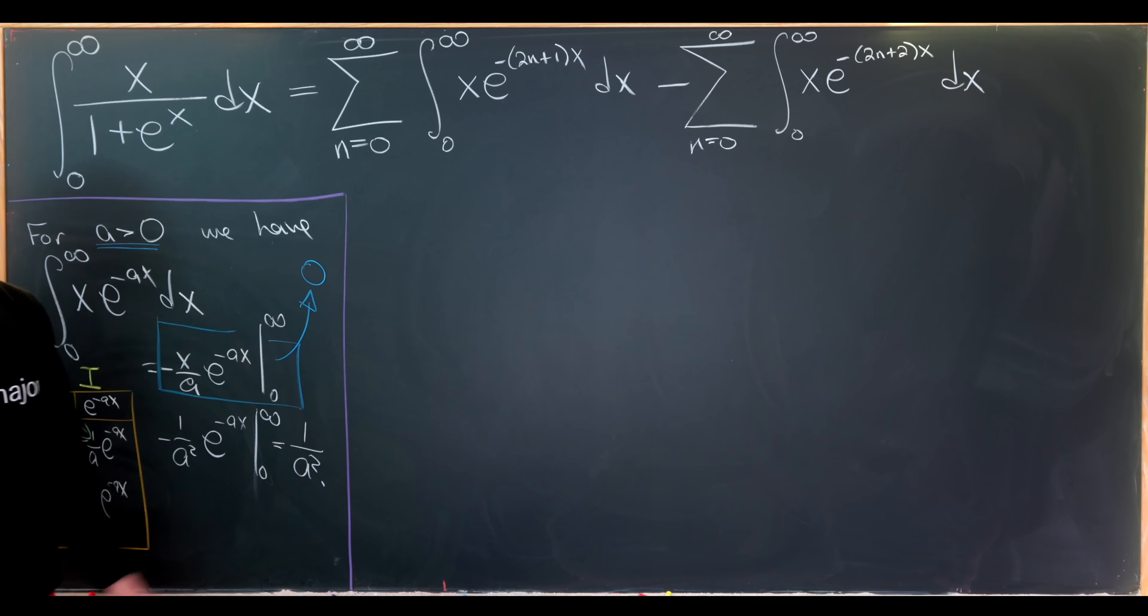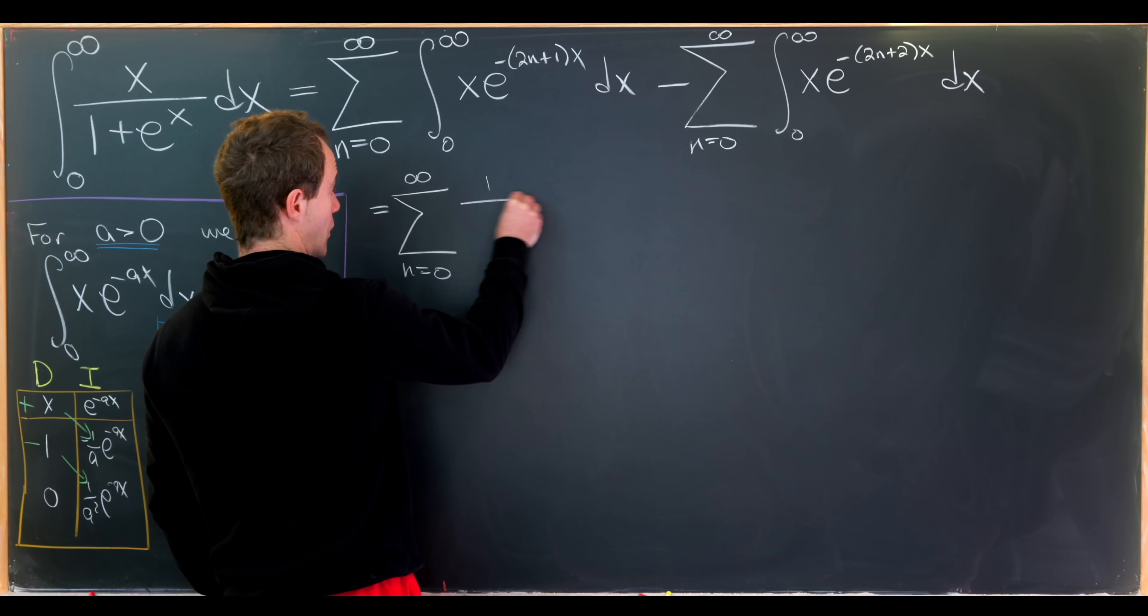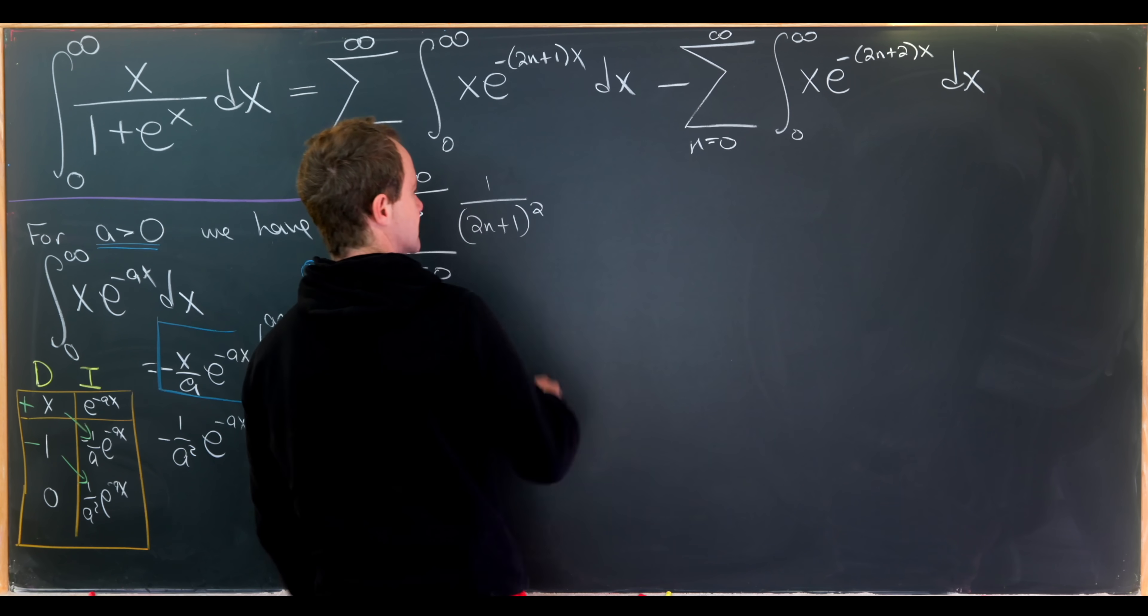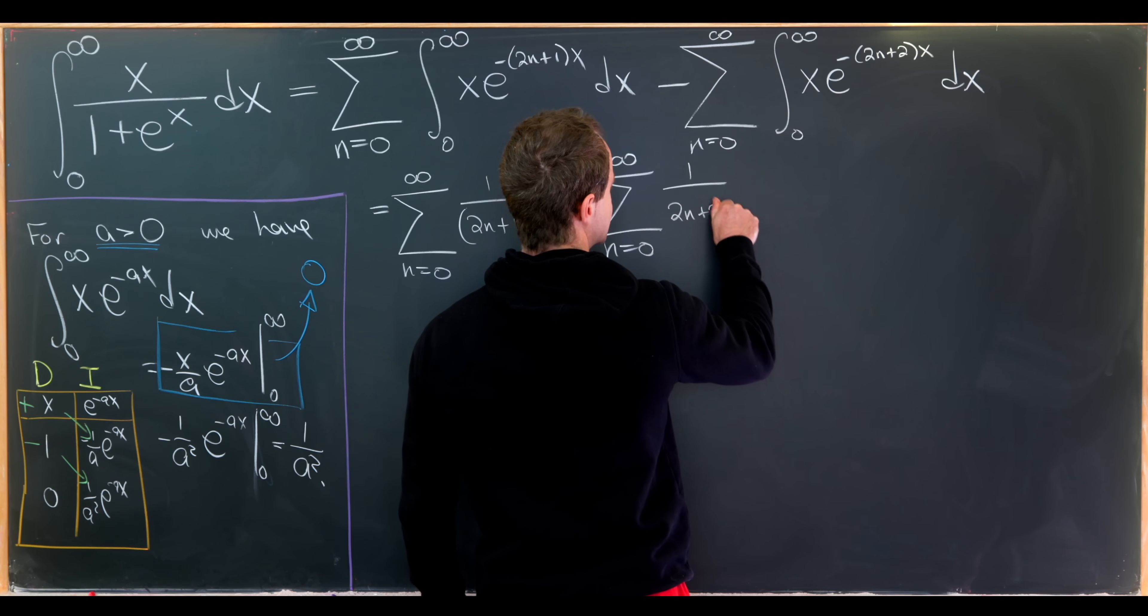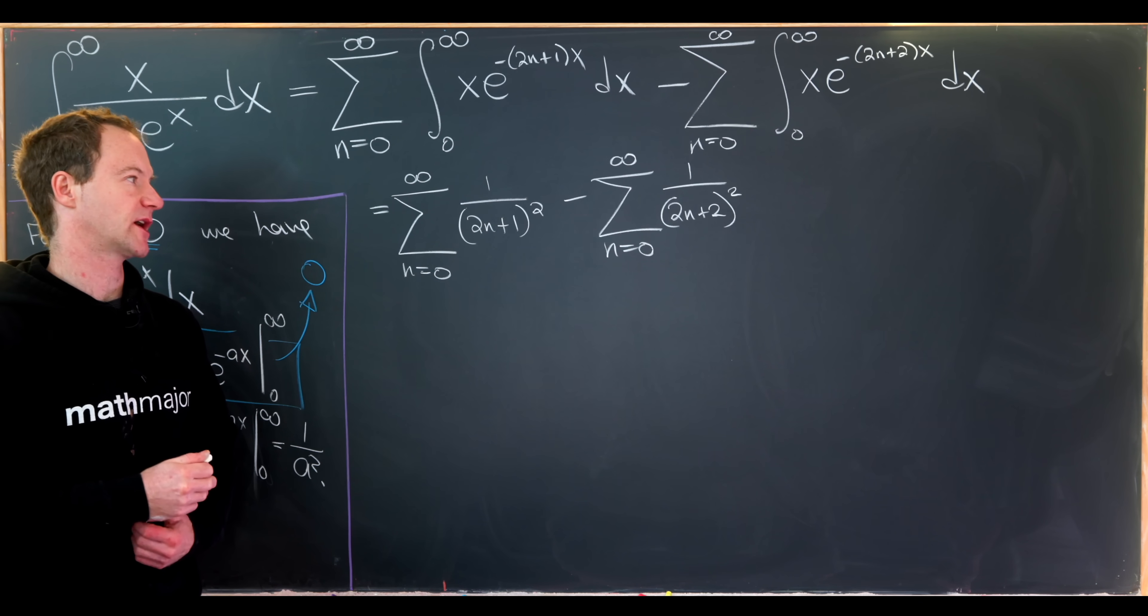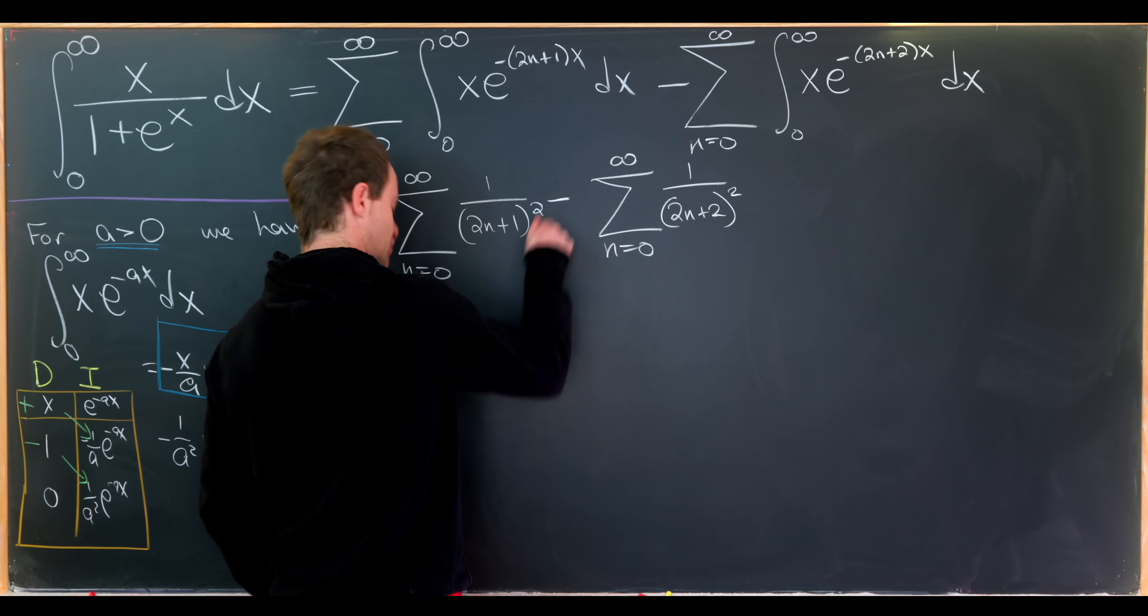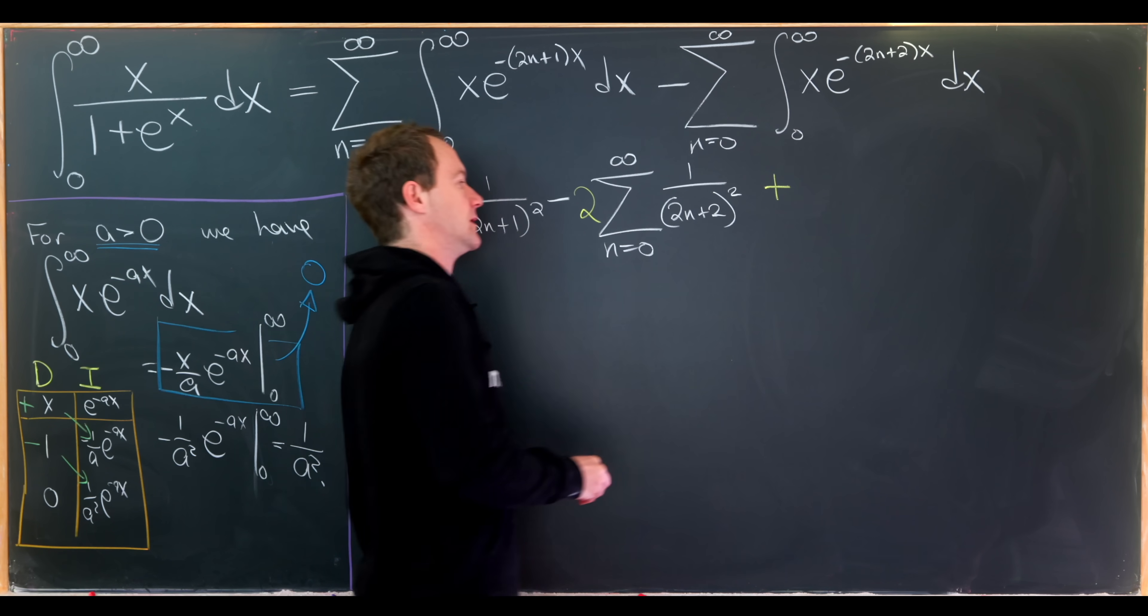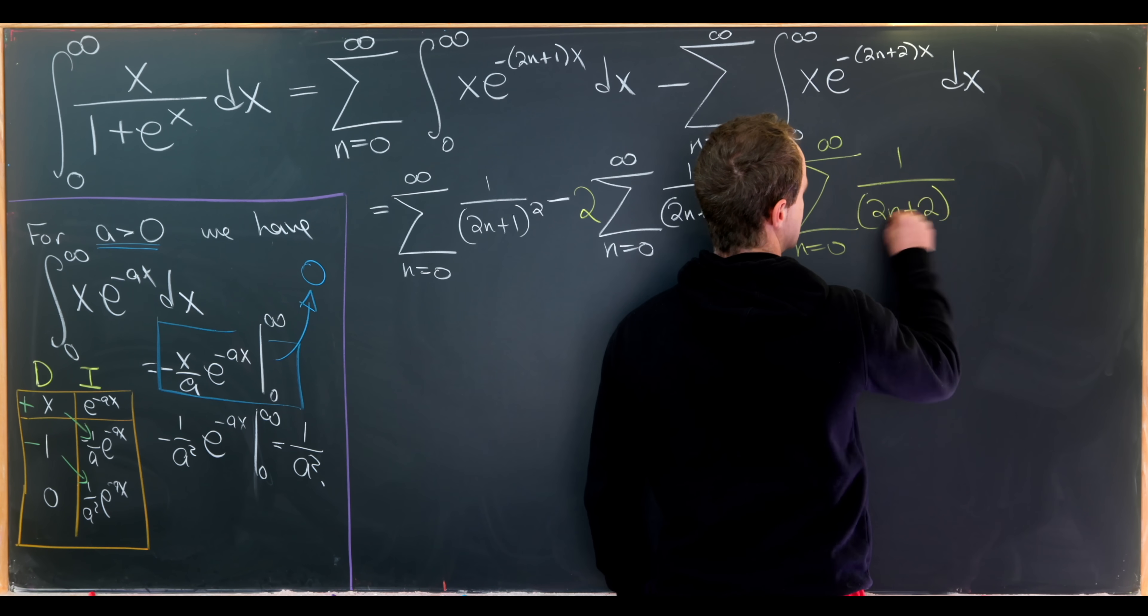That means we can have nice formulas for each of those sums immediately. This first one we'll have the sum as n goes from 0 to infinity of 1 over 2n plus 1 squared. So that's the sum of the reciprocals of the odd squares. And from that we subtract the sum as n goes from 0 to infinity of 1 over 2n plus 2 quantity squared. So that's the sum of the reciprocal of the even squares. Now I'm going to do a bit of a trick. I'm going to add and subtract another copy of this second sum. So I'll subtract it by putting a coefficient of 2 in front of this, and then I'll add it by adding another copy on.